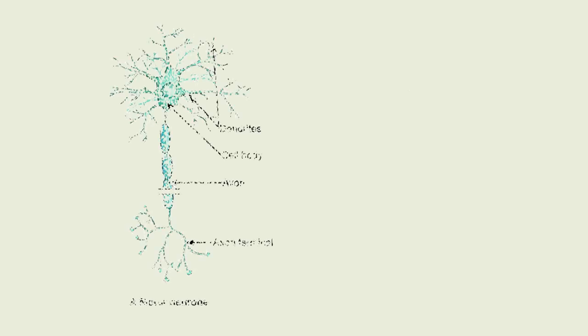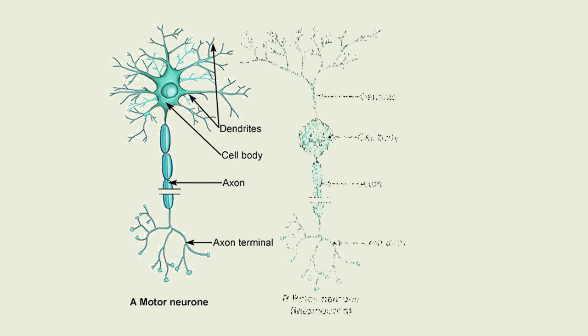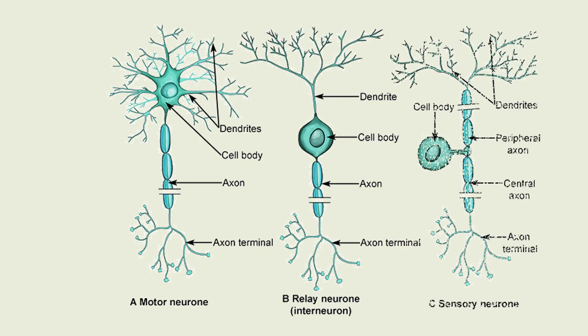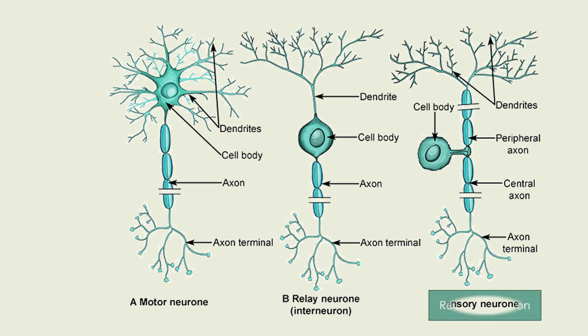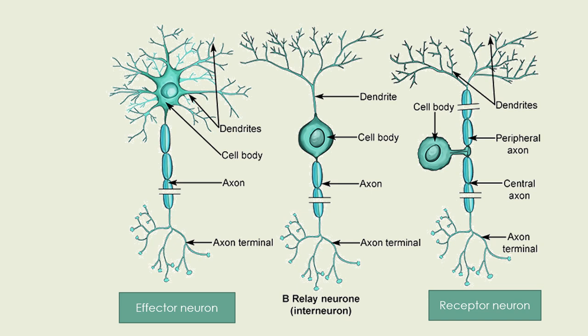After understanding the structure of a typical neuron, let's have a look at its different types. There are three types of neurons: motor neuron, relay neuron, and sensory neuron. These are classified on the basis of the direction in which the impulse is transferred. Sensory neurons carry impulses from receptors to the central nervous system, and that is why they are also known as receptor neurons. Motor neurons carry impulses from the central nervous system to the effectors, while relay or interneurons make up the central nervous system.